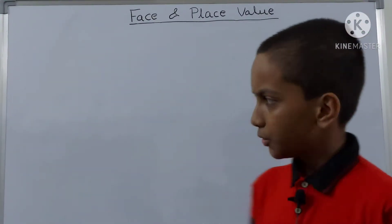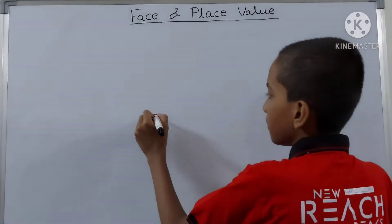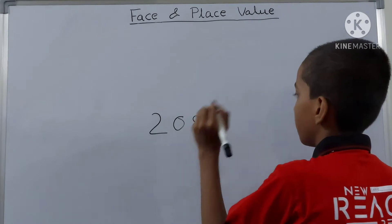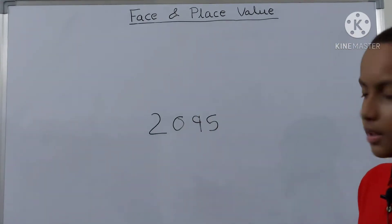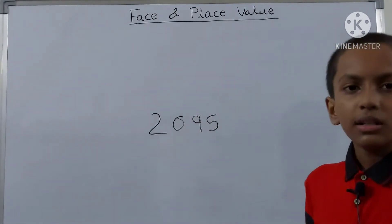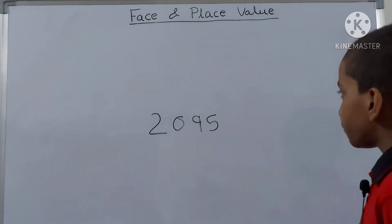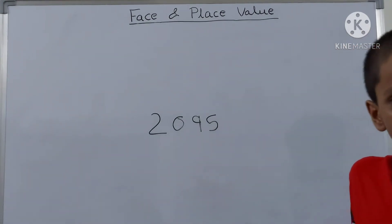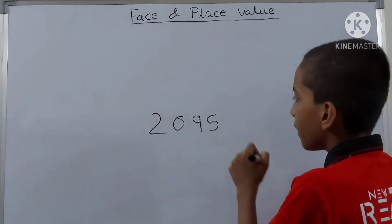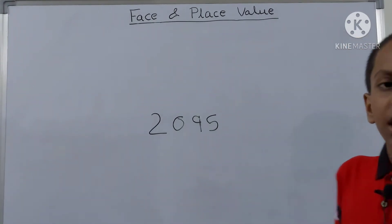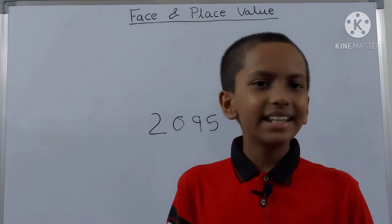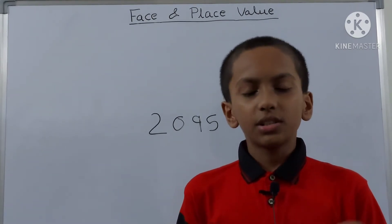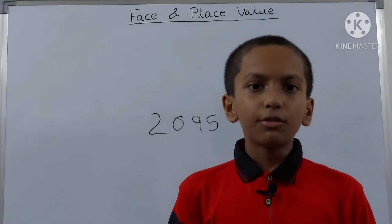First, let's see the face value. Let's take any number, for example 2095. Now let's see the face value of each and every digit. The face value of 5 is 5 only. Remember that the face value of any digit in any number at any place is always the digit itself only.